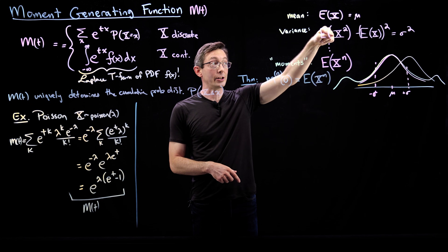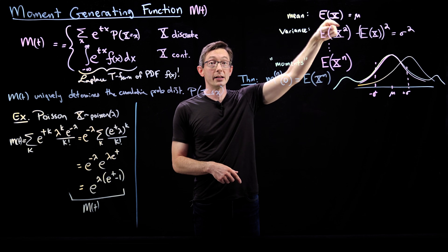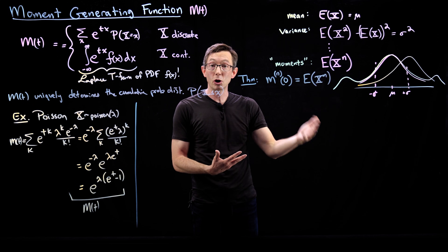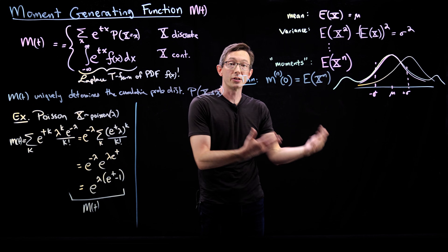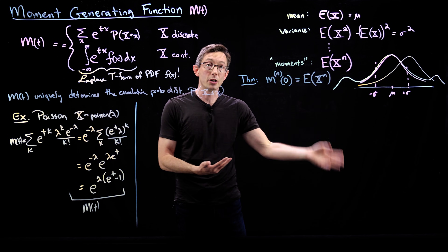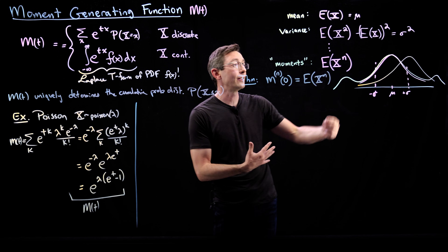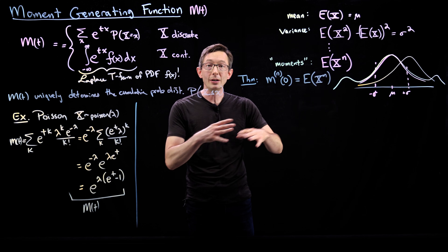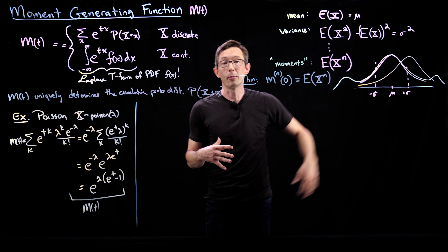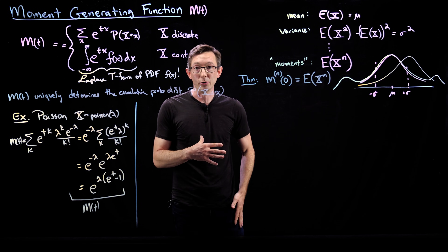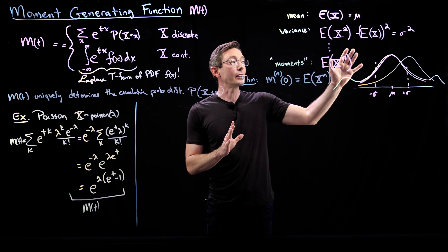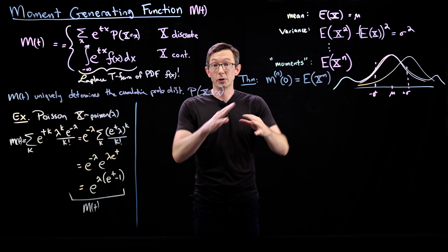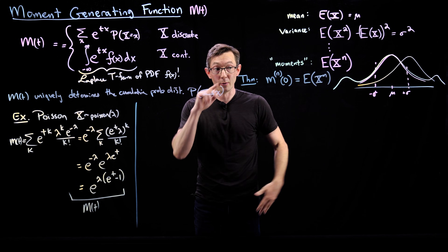The second moment, the expectation of x squared, is related to your variance. The third moment, expectation of x cubed, is related to your skewness. The fourth moment is kurtosis, and so on and so forth. These give a unique kind of fingerprint or unique ID for your probability distribution. This is a very useful way of thinking of PDFs in terms of their moments, their higher order moments.